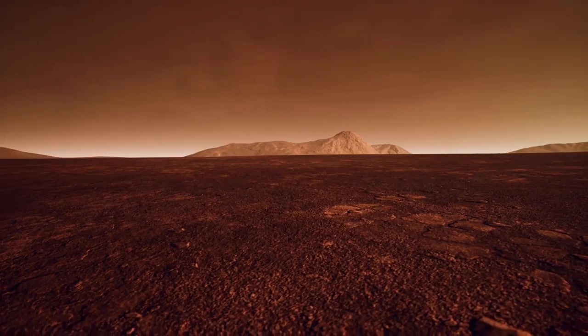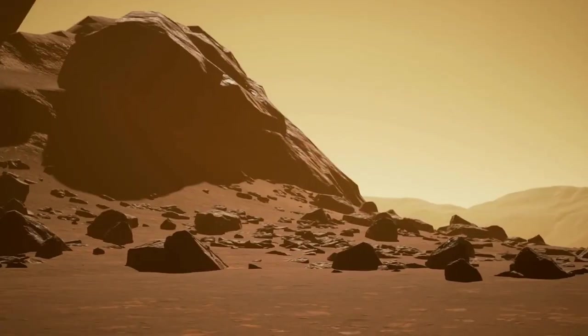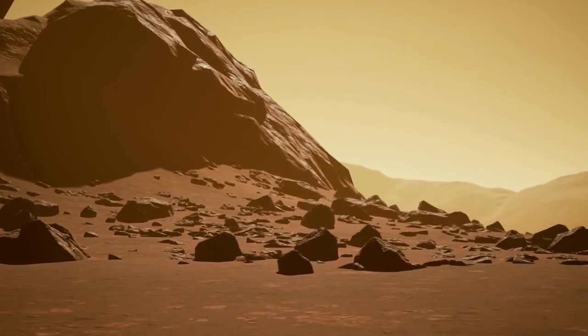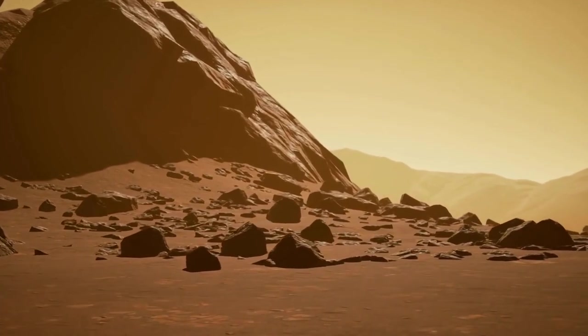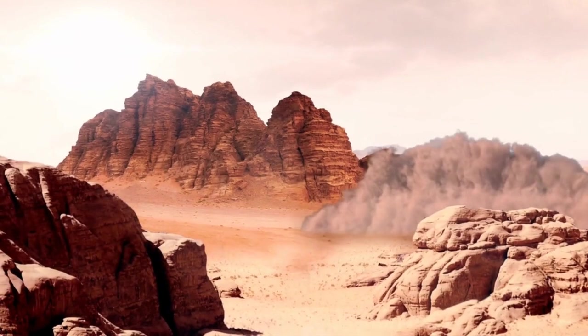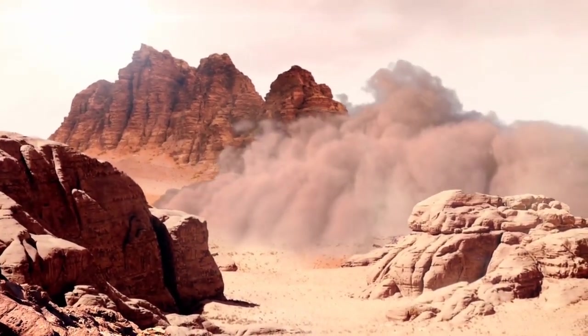Mars has a very thin atmosphere compared to Earth, composed mostly of carbon dioxide. The temperature on Mars can range from minus 125 degrees Celsius to 20 degrees C, making it a very cold and hostile environment. The dust storms on Mars are also fascinating, as they can cover the entire planet and last for weeks.